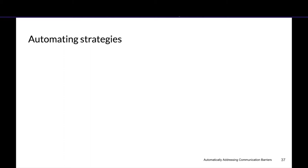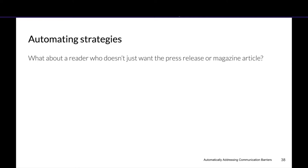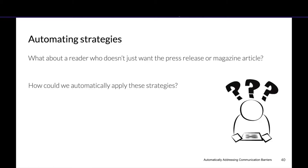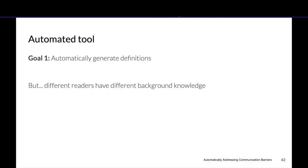Being able to automatically identify these strategies is great, but many analyzed documents were professionally written for general audiences. Not every journal paper is covered by popular media, and as more scientific information is shared informally over the internet and social media, readers are exposed to more language that wasn't written with them in mind. If we could automatically apply the writing strategies we identified, that could help adapt language on the fly to a wider range of readers. In our next project, we do that with one strategy: defining complex scientific terms. Our goal is to build an NLP model that generates definitions automatically. Different readers have different background knowledge, so a one-size-fits-all approach could leave out many readers — we also aim to generate definitions with varying complexity.